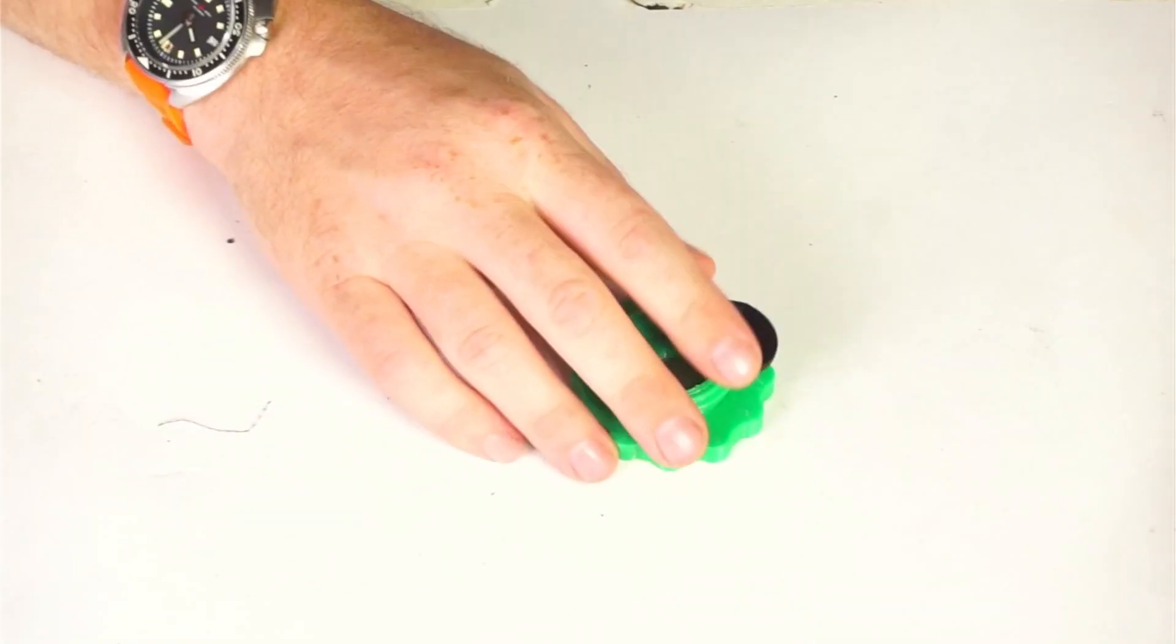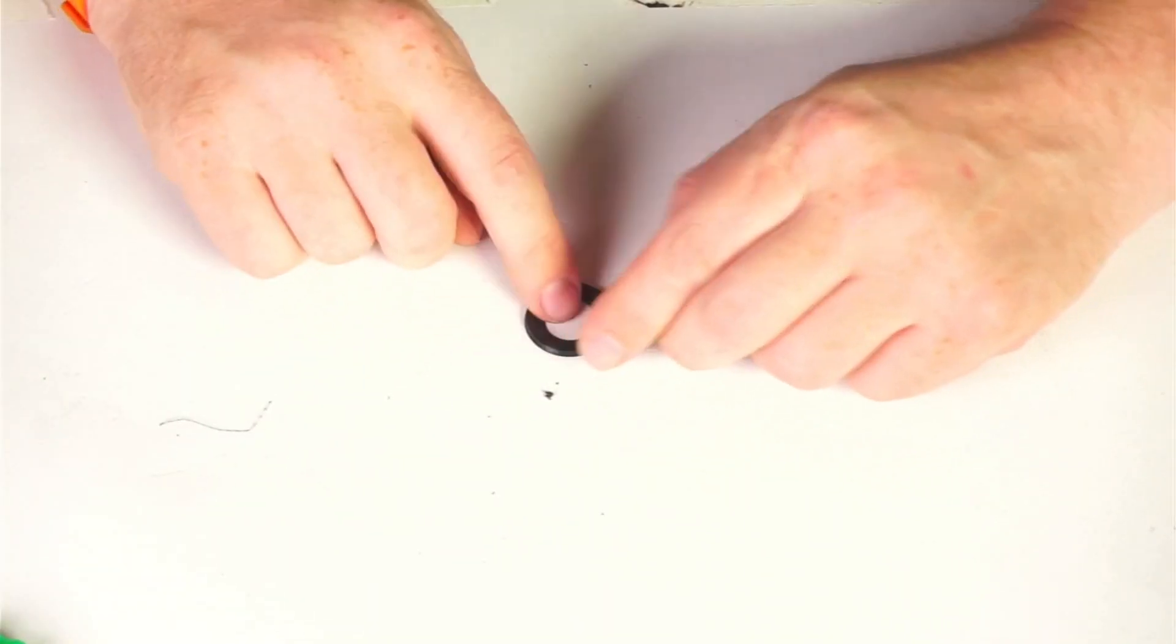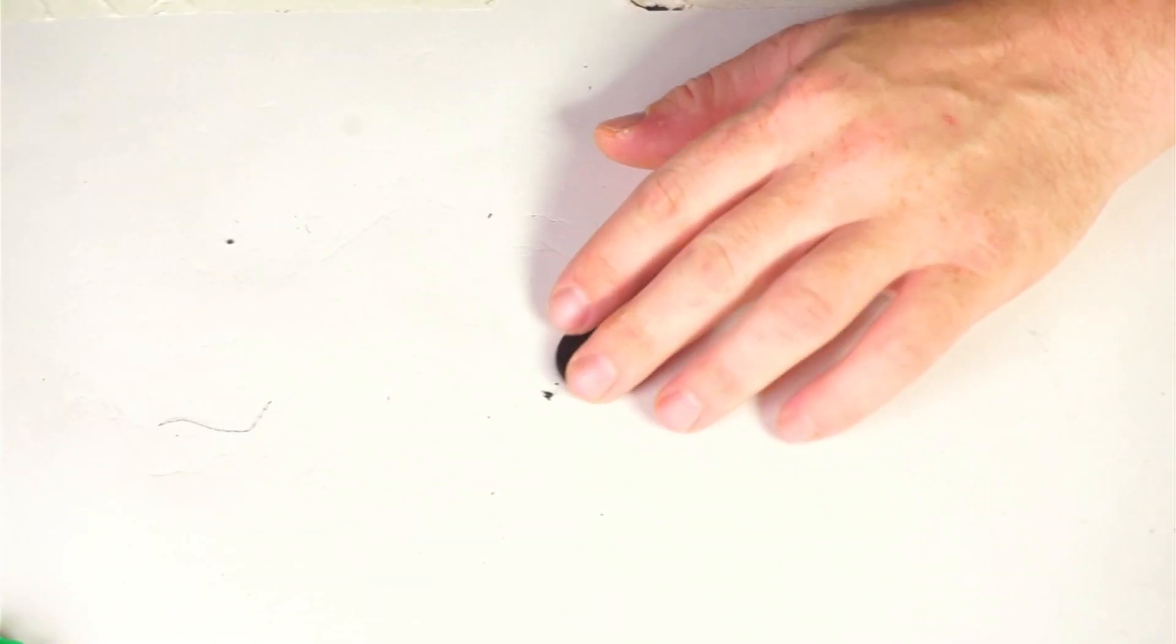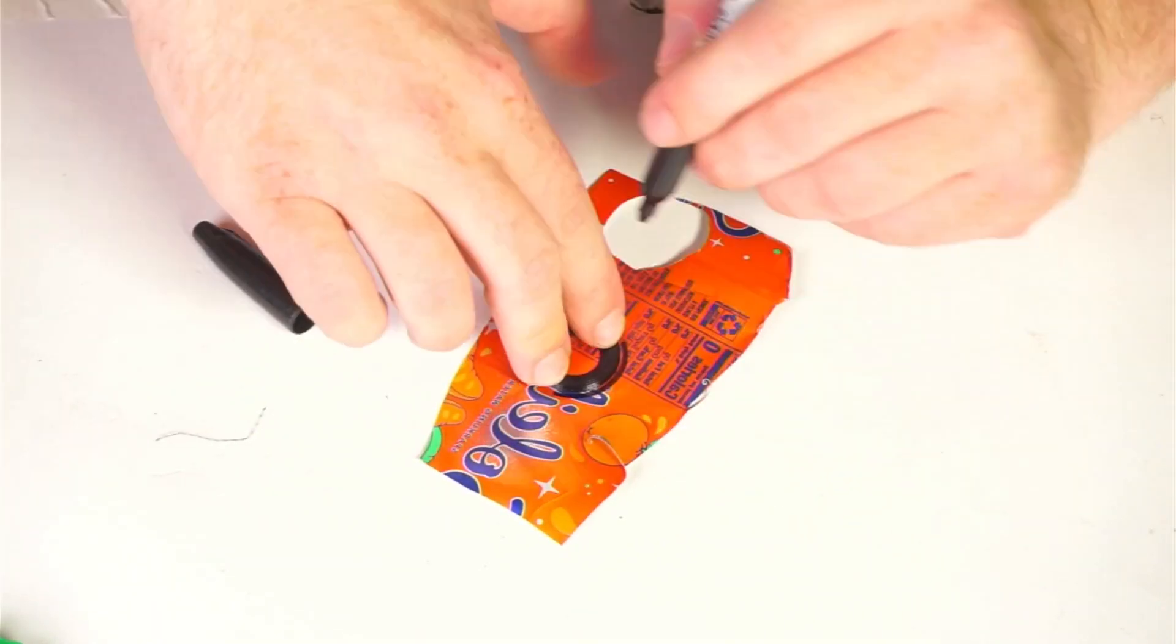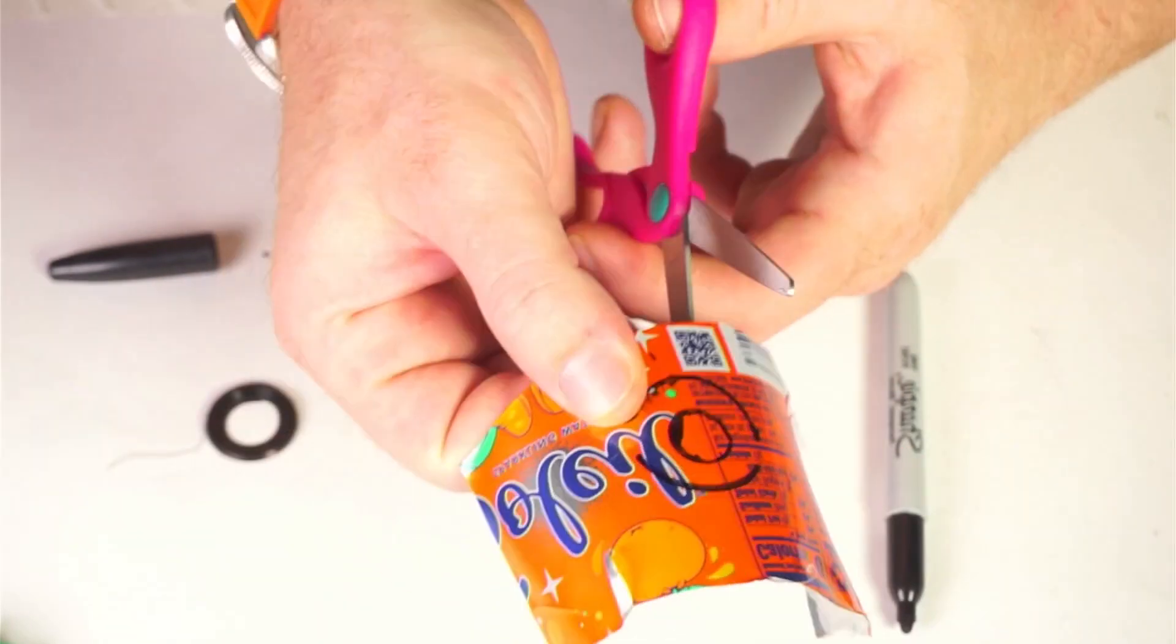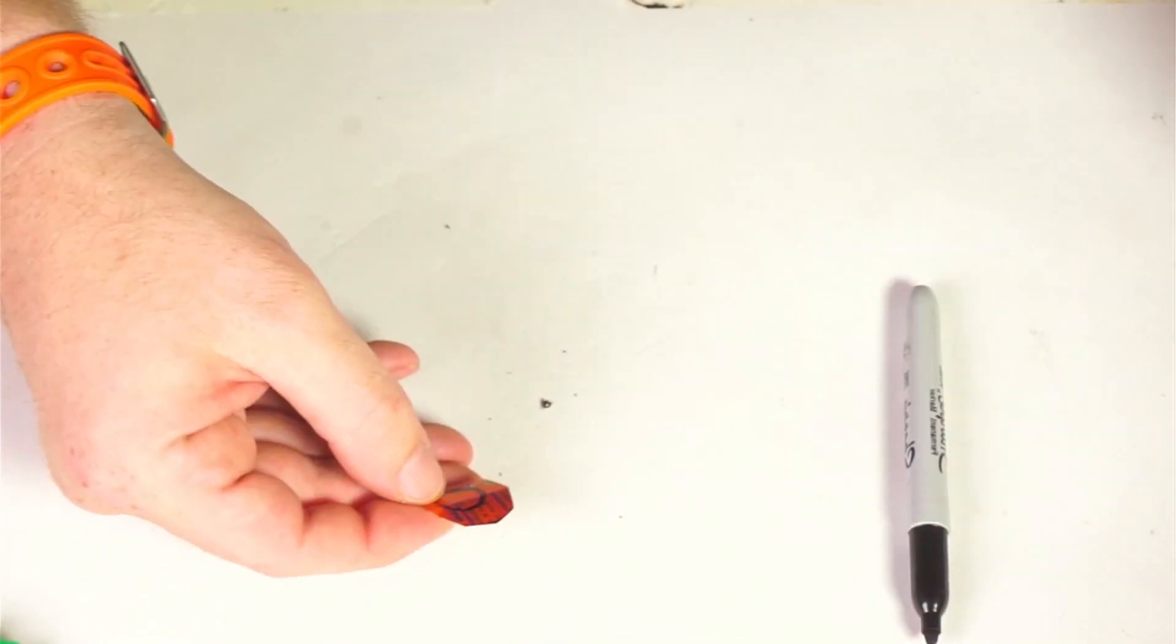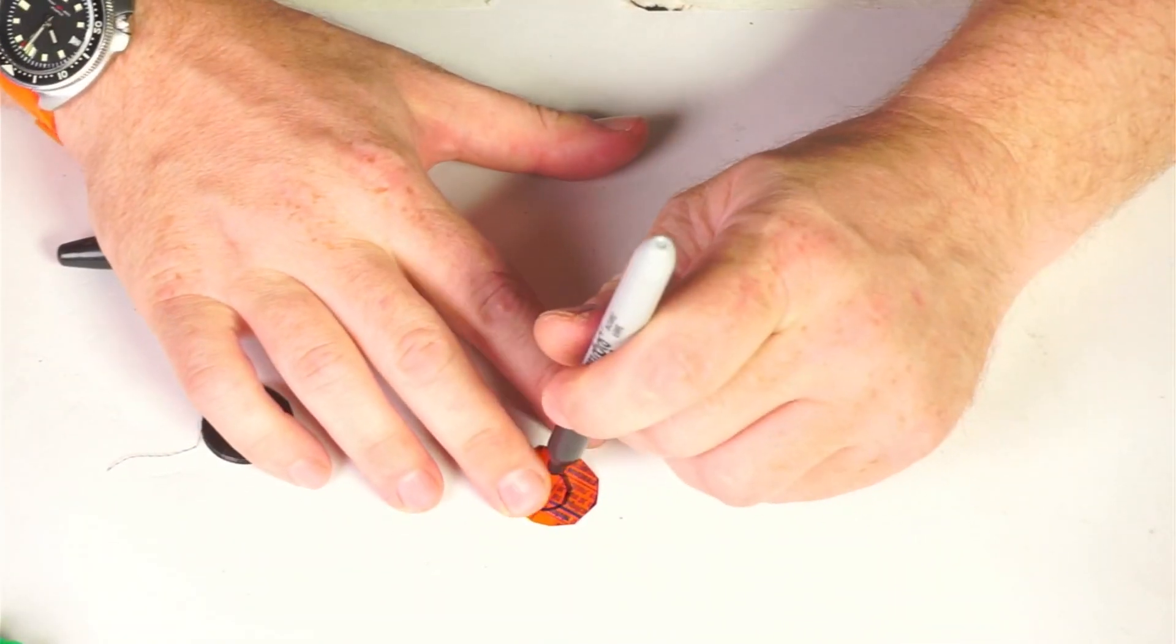All right, now we're at the point where we're going to make a pinhole for this guy. I like to use this pinhole retaining clip as an outline. Okay, a little dot in the middle here.